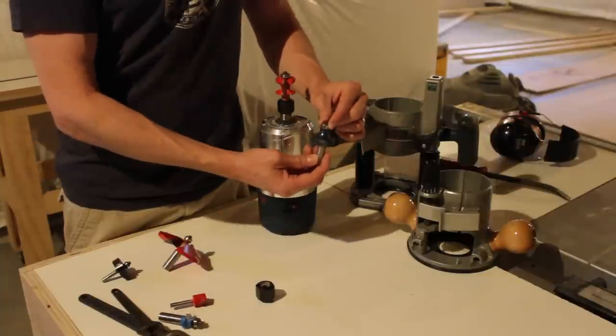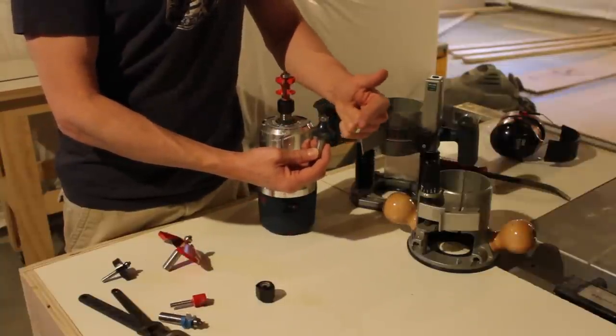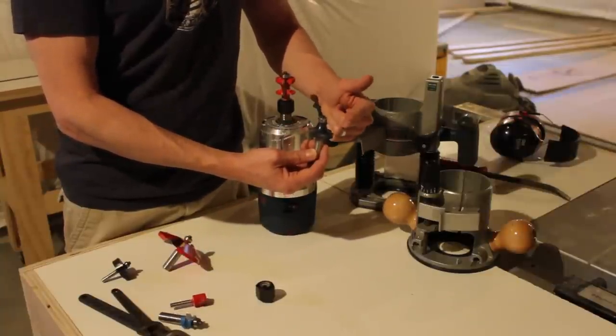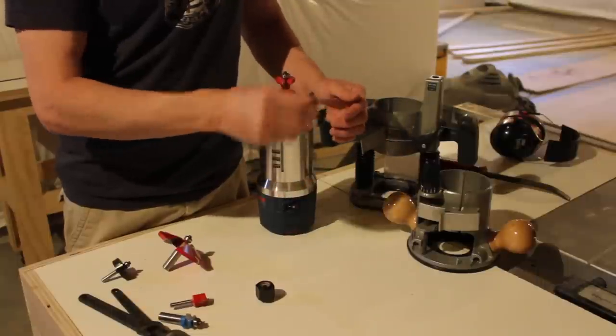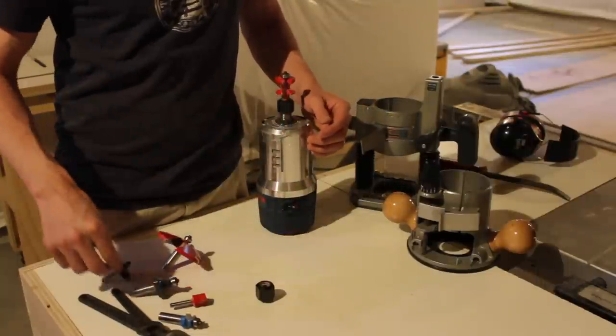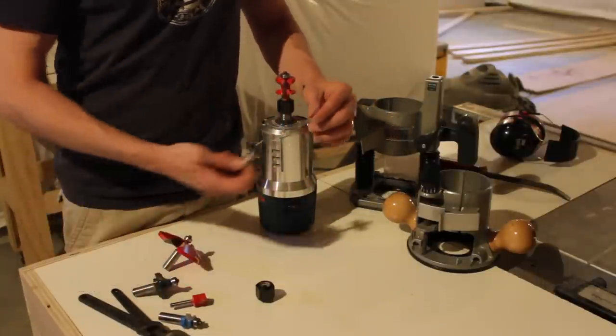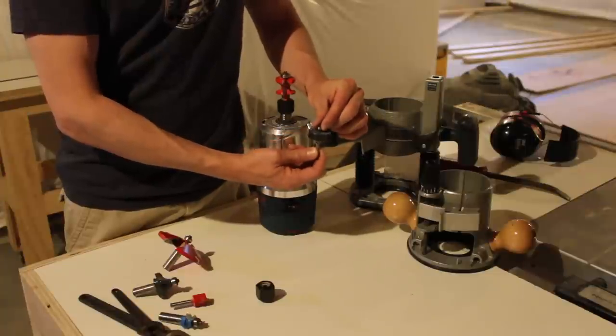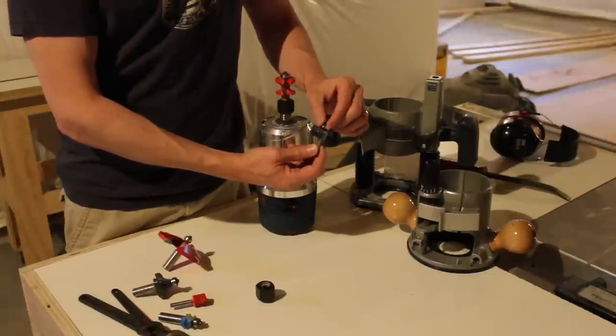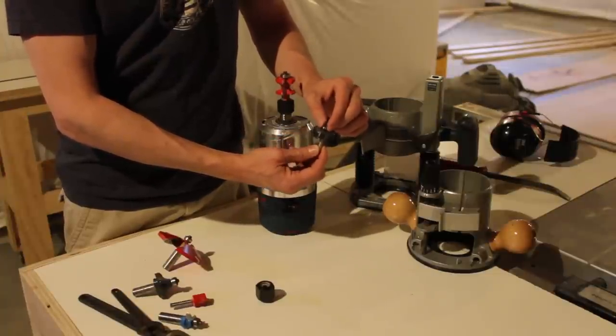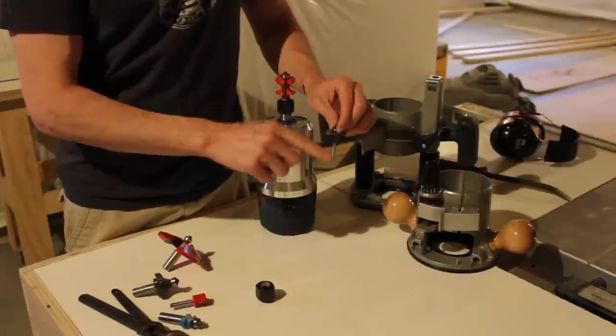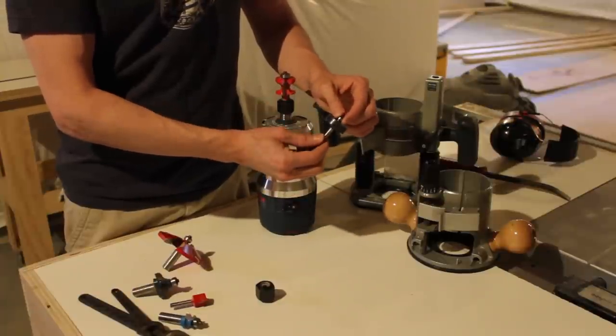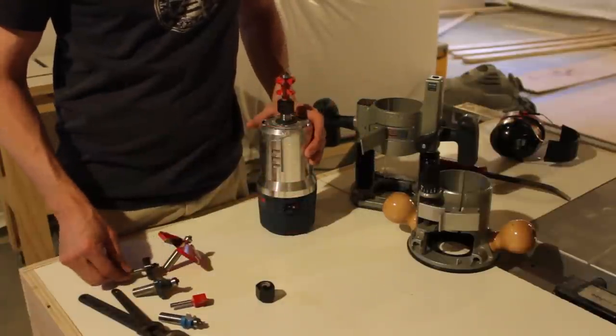This is a round over bit, so it's got a nice little curved edge to it. If you wanted to run that alongside a table, you could put a nice little round over on it. This is a rabbiting bit. For cabinet building or making a picture frame, you could notch a piece of wood with this. It's a nice little router bit to have.